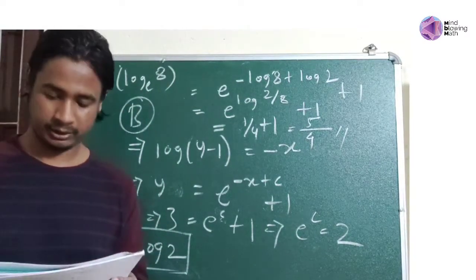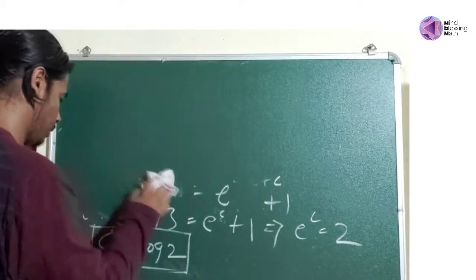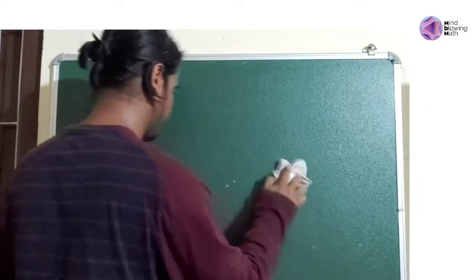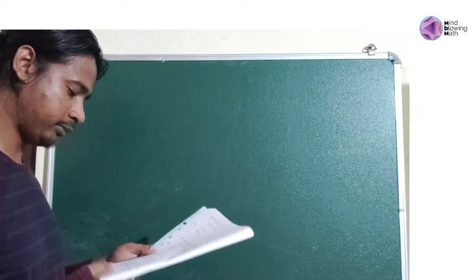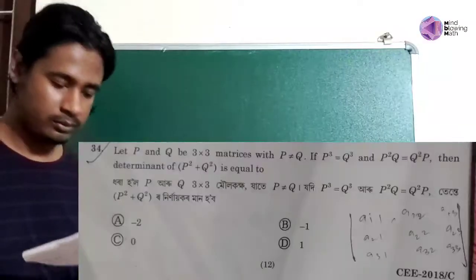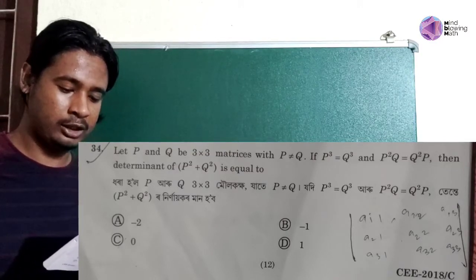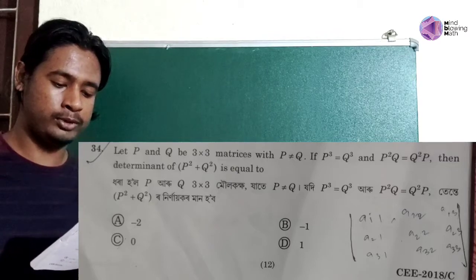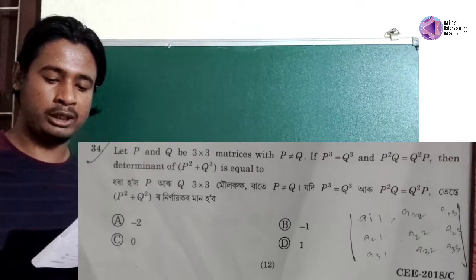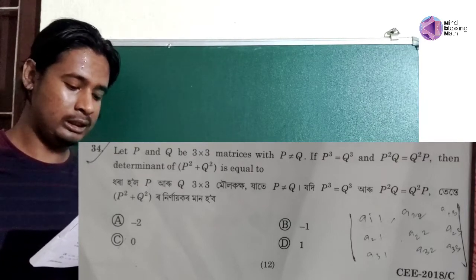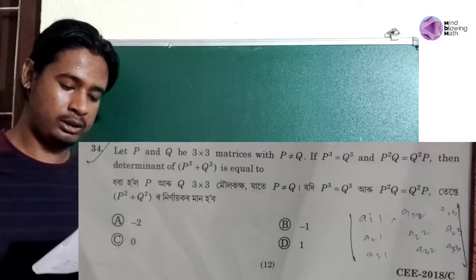Option B is correct. So next question — question number 34. Let P and Q be 3×3 matrices. P is not equal to Q — this is important information. P cubed is equal to Q cubed, and P squared Q is equal to Q squared P. Then determinant of P squared plus Q squared is equal to?